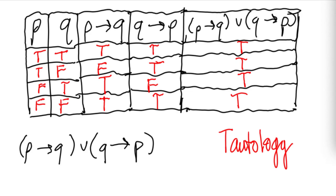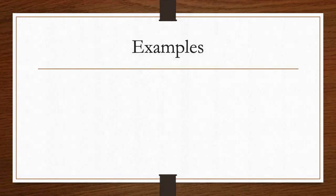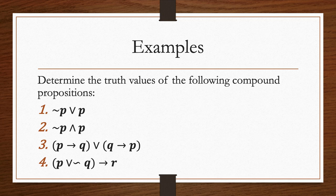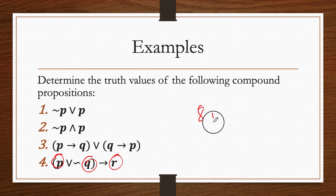So we've answered numbers one, two, and three. Number one is a tautology, number two is a contradiction, and number three is also a tautology. Number four is left as an assignment and will be answered in the next video. Note that number four involves three propositions — P, Q, and R — so you will need eight rows in the truth table.